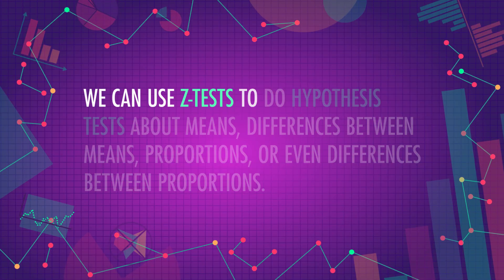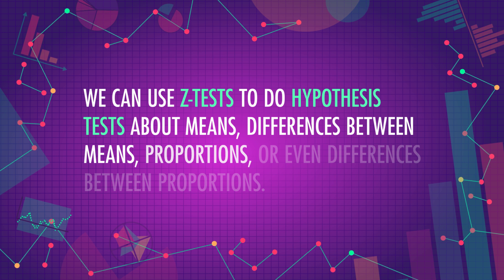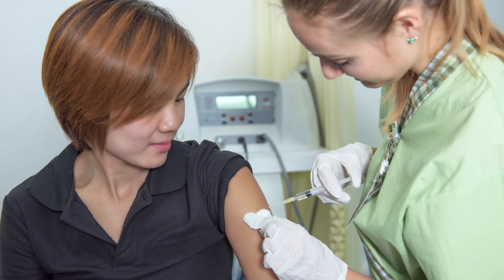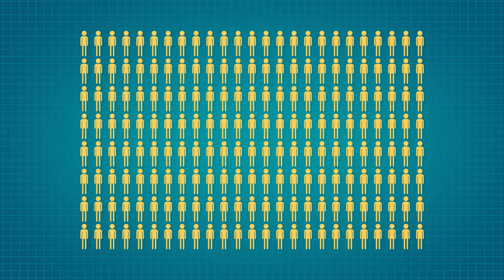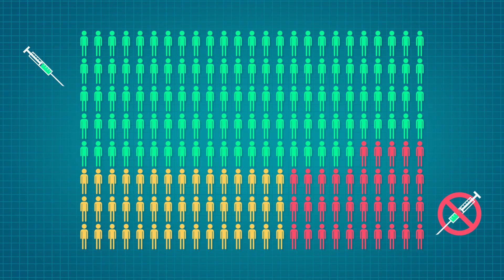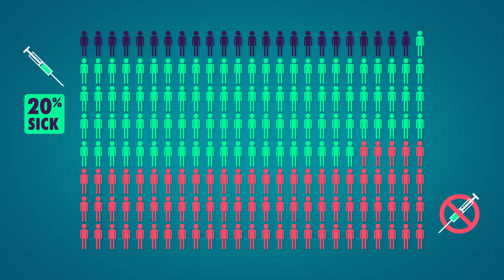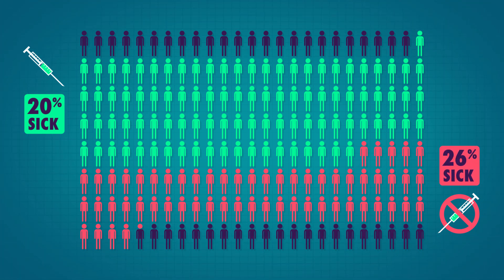The p-value will tell us how rare or extreme our data is, so that we can figure out whether we think there's an effect — like whether children with more than 100 books in their home have a higher than average IQ. We can use z-tests to do hypothesis tests about means, differences between means, proportions, or even differences between proportions. A researcher may want to know whether people in a certain region who got this year's flu vaccine were less likely to get the flu. They randomly sample a thousand people, and found that 600 people got the flu vaccine and 400 didn't. Out of the 600 people who got the vaccine, 20% still got the flu. Out of the 400 people who did not get the vaccine, 26% got the flu.